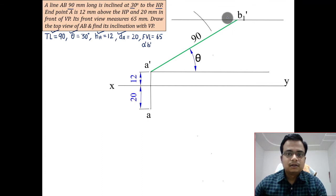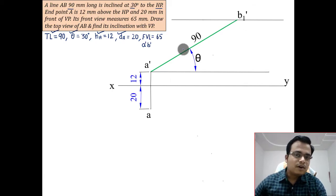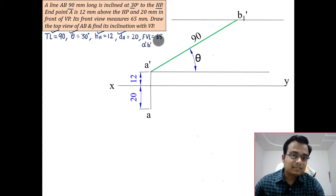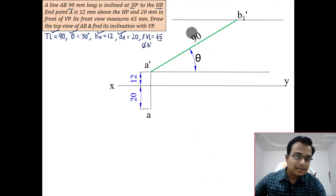Now what did you just see? What I have done, we know that the front view is going to be somewhere along this locus line. How far is that front view from a dash? Well, that front view, or one end of the front view rather, b dash, is at a distance of 65 from a dash.